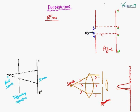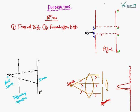The diffraction phenomena in light are usually of two types. The first is called Fresnel diffraction, and the second is called Fraunhofer diffraction. Let us discuss the difference between Fresnel diffraction and Fraunhofer diffraction.